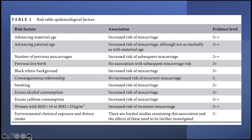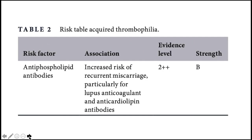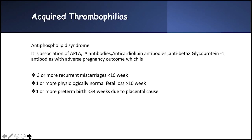Regarding the epidemiological table, a consanguineous relationship is not associated with increased miscarriage risk — this can come up in your exam. Table 2 shows the association of acquired thrombophilias, where there is an increased risk of miscarriage specifically when associated with lupus anticoagulant and anti-cardiolipin antibodies.